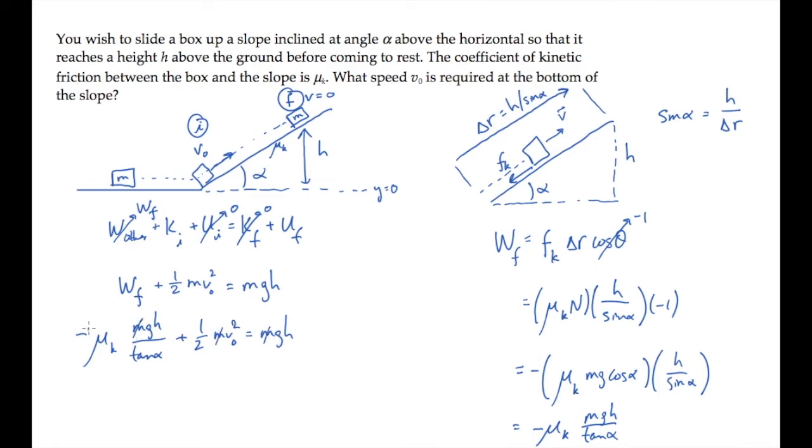First cancel the mass from every term, and then multiply by 2 to get rid of the factor of 1 half, and solve for v0, seeing that it equals the square root of 2gh times the quantity 1 plus mu sub k over tangent alpha.